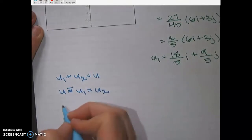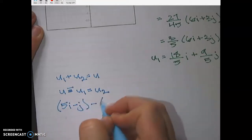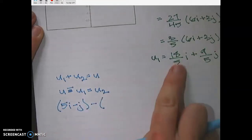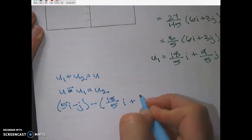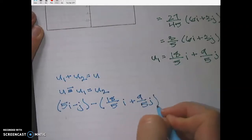So I know that u is 5i minus j, and I'm going to subtract what I found for u1, 18 over 5i plus 9 fifths j. And that ought to give me u2.